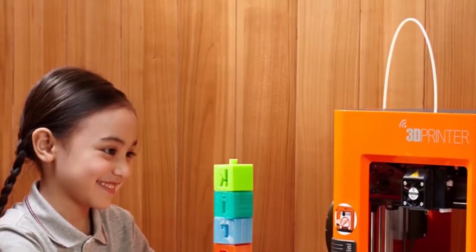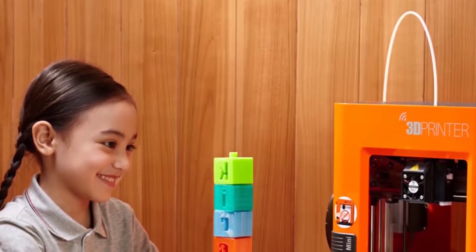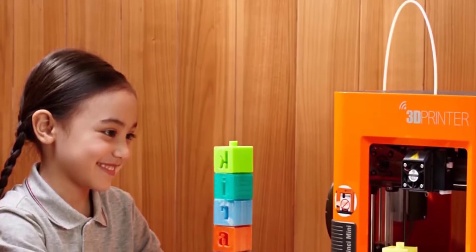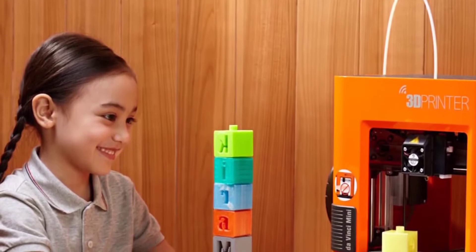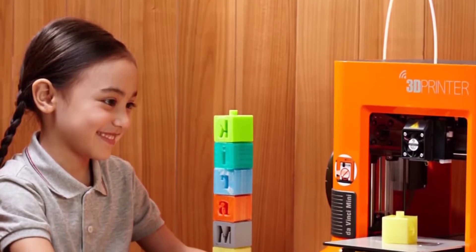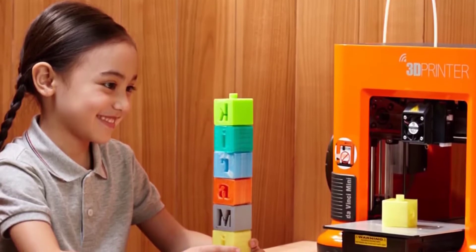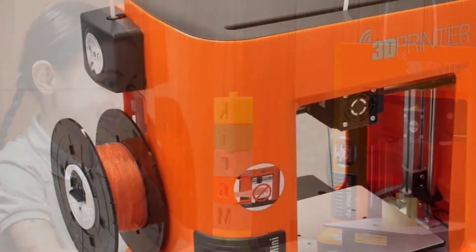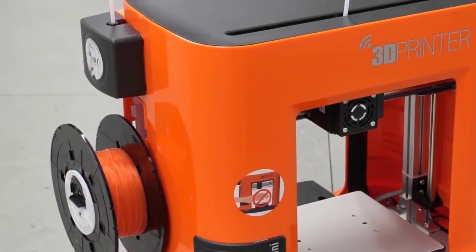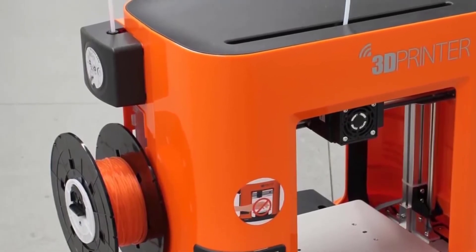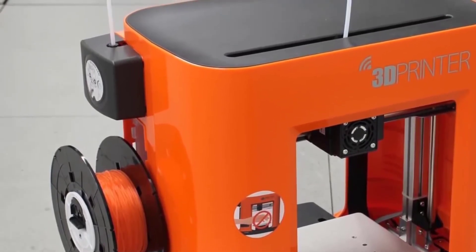The DaVinci Mini works only with PLA filament from XYZ, so if you try to install a reel of third-party filament without one of the NFC tags that accompanies a reel of XYZ's own filament, the printer will refuse to accept it. As well as authorizing the filament for use, these tags contain the color of the filament, plus a running total of the amount used.